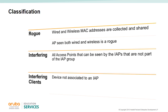Interfering clients are devices within the IPS radio frequency area that are not associated to an AP; they can cause interference in the radio band. A valid AP would be one of the IPs in this cluster.